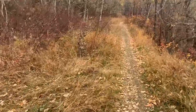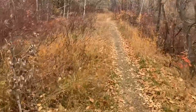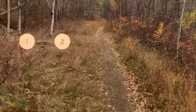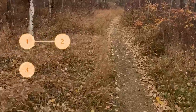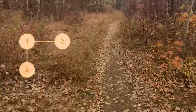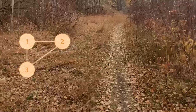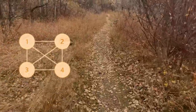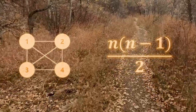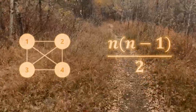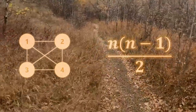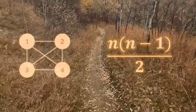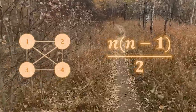The other concept is the number of connections in a group of people. One person: no relationships. Two people: one relationship. Three people: three relationships. Four people: six relationships. The formula is n times (n minus 1) over 2, where n is the number of people in the group. As n gets large, this gets out of control fast. With 100 people in a group, you have almost 5,000 different connections.